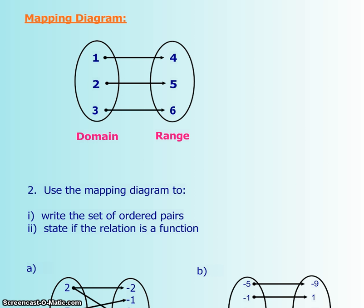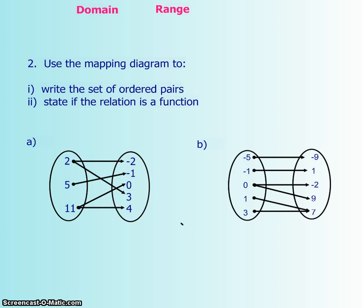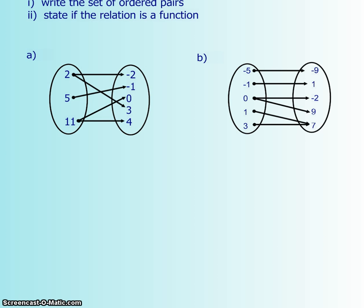Now in the previous video, we talked about mapping diagrams, and again, your domain is your first oval, and then your second oval is your range, your x and your y values. So if we have a question like this, use a mapping diagram to, first of all, write the set of ordered pairs, and then second of all, state if the relation is a function.